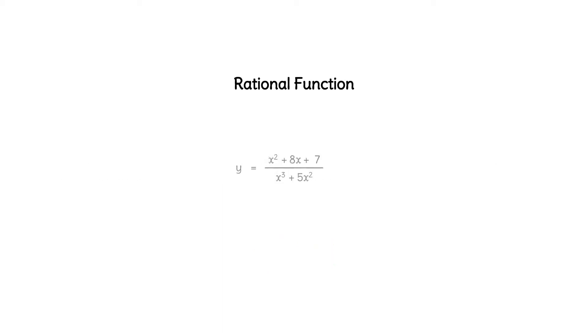A rational function is a ratio of two polynomials. Here we've got a quadratic on the top and a cubic in the denominator. Many rational functions you'll encounter have polynomials which can be factored to reveal their characteristics.